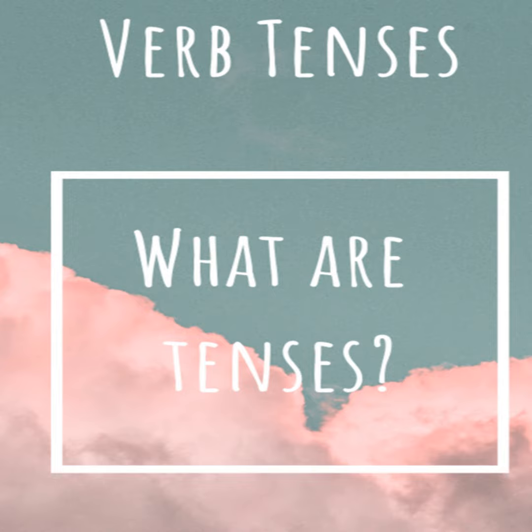The Future Perfect Tenses. Non-continuous form: shall/will plus have plus a past participle. Continuous form: shall plus have plus been plus a present participle. The future perfect tense is used to express an action which will be completed by some future time or date. E.g., I shall have finished my assignment by ten o'clock (future perfect). By the end of the semester, I shall have been learning English for ten years (future perfect continuous).